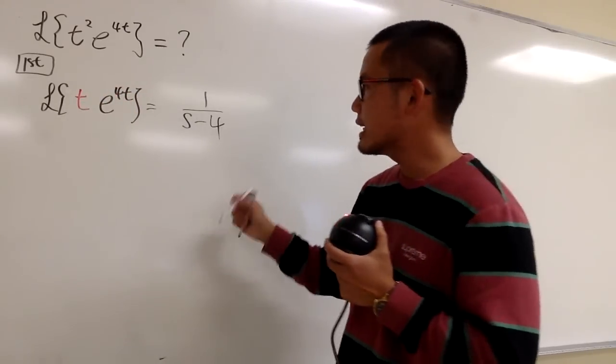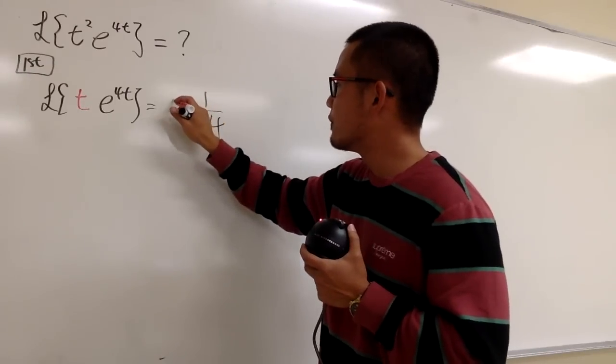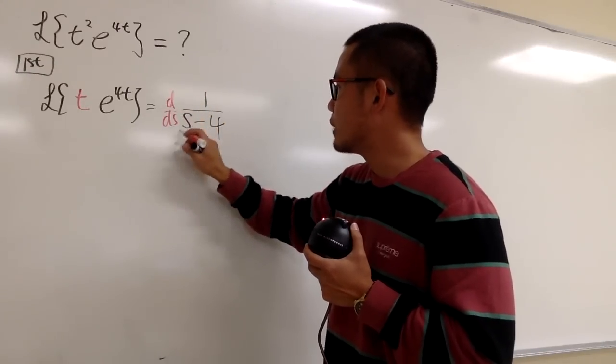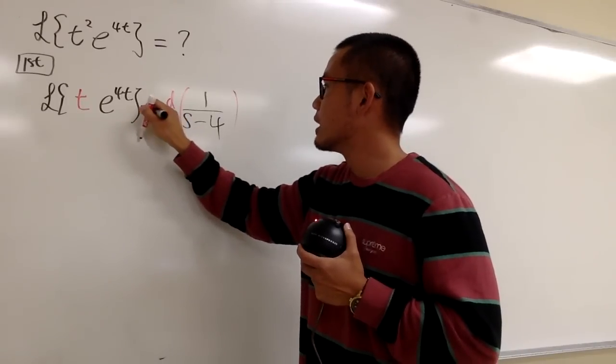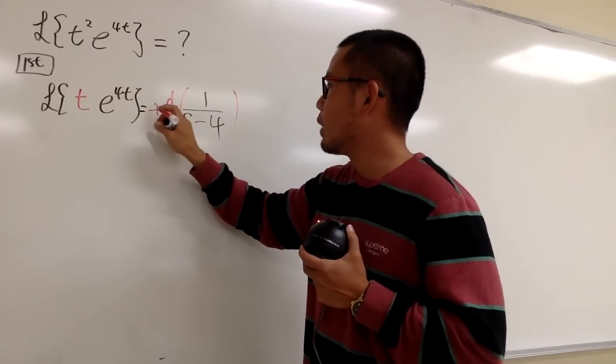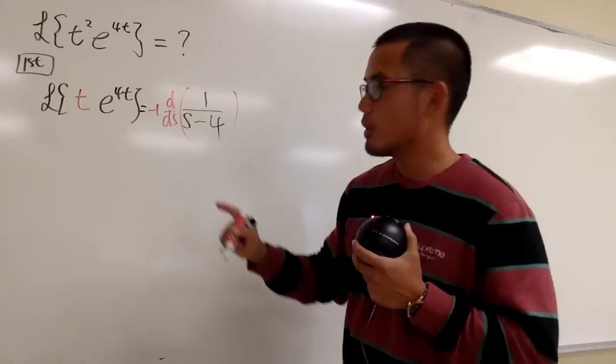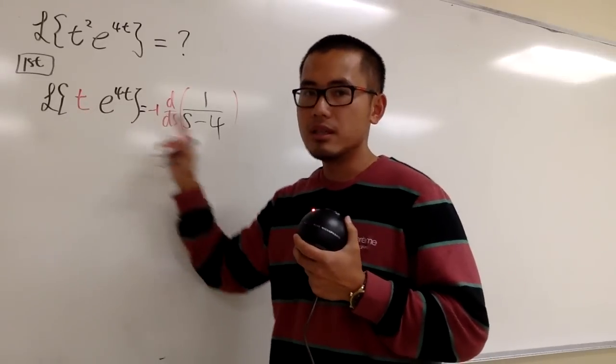When you multiply inside here by t to the first power, what we will have to do on the right-hand side is go ahead and differentiate this with respect to s only one time. And don't forget, we have to multiply this by negative 1 one time. I multiply by t, this is what we have to do.